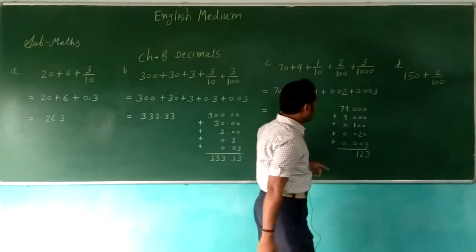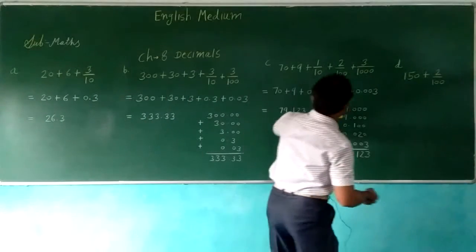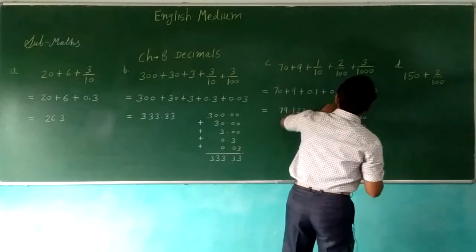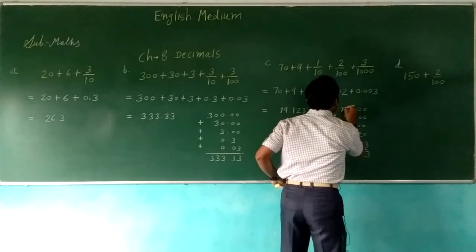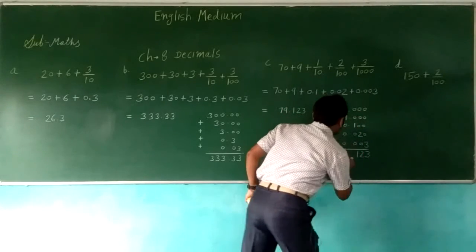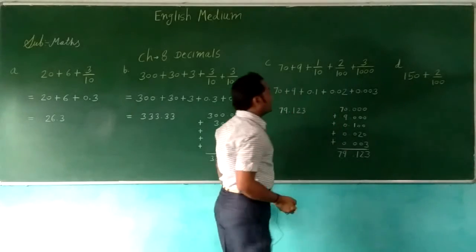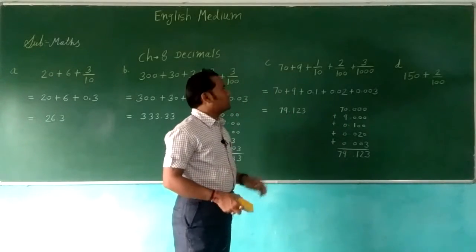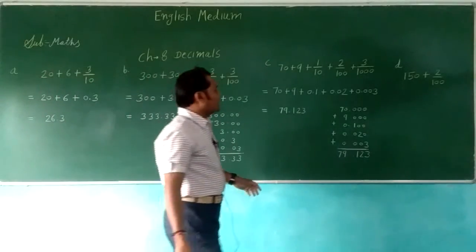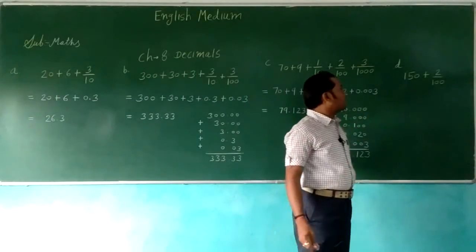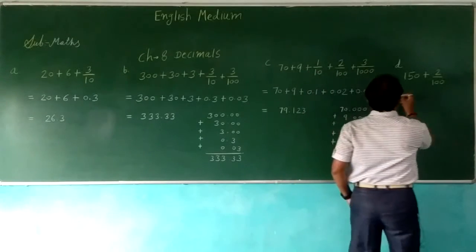We have 70 here, so we will add all these together. The answer is 79.123.